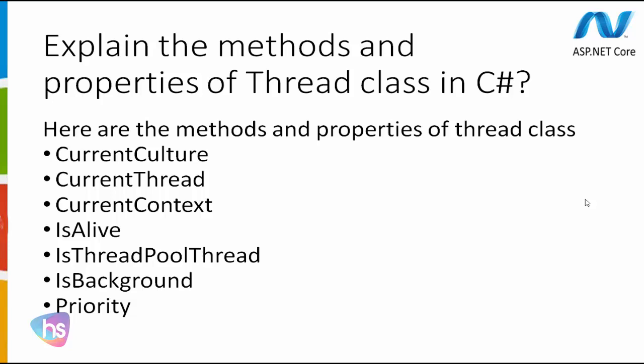Explain the methods and properties of the Thread class in C-Sharp. The properties of the Thread class include: CurrentCulture, CurrentThread, CurrentContext, IsAlive, IsThreadPoolThread, IsBackground, and Priority.